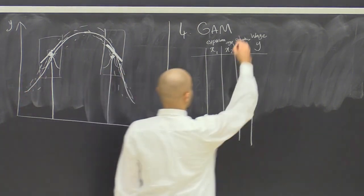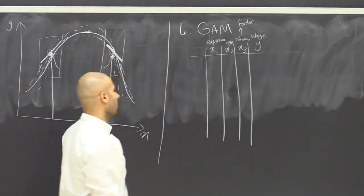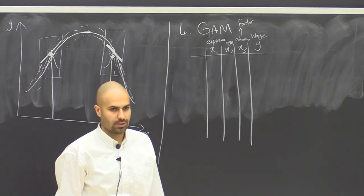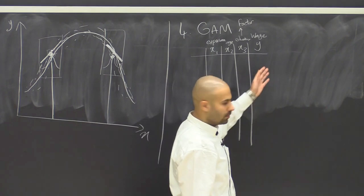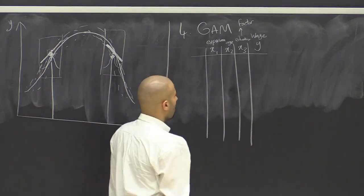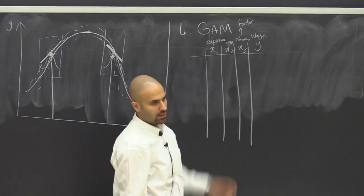Level of education is a discrete variable, so it's a factor. Age and experience are continuous. And then we want to model the data, so this is supervised learning. We want to model the data so that we have different functions for x1, x2 and x3.